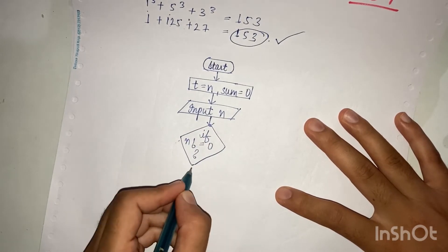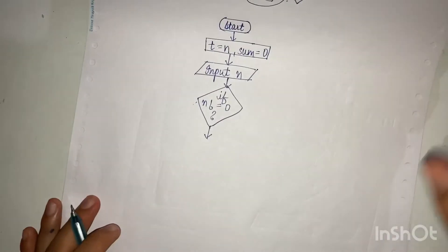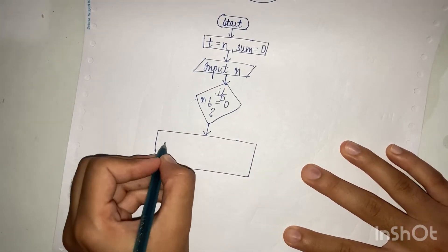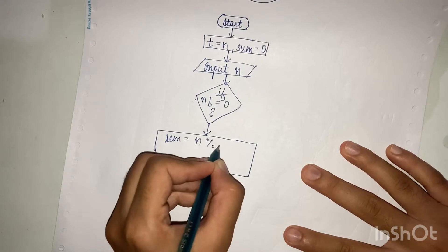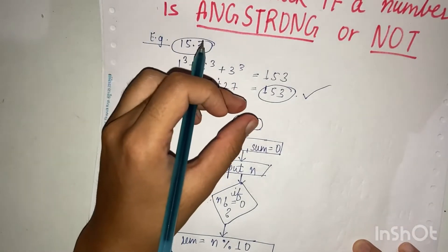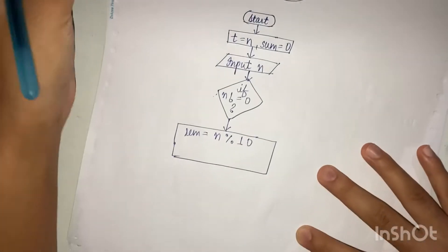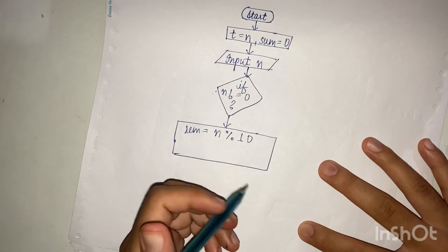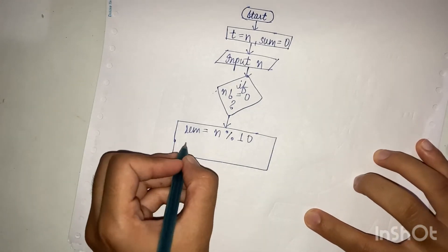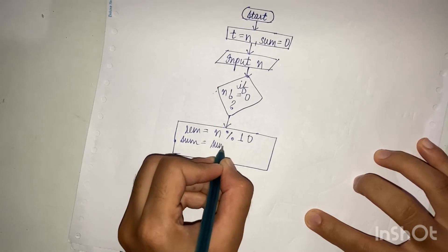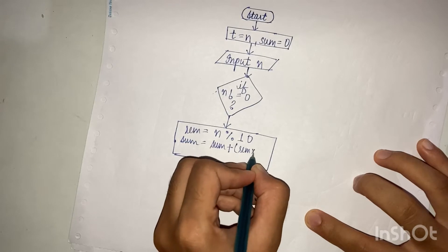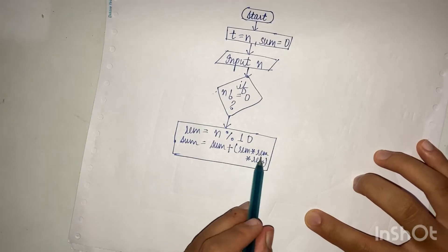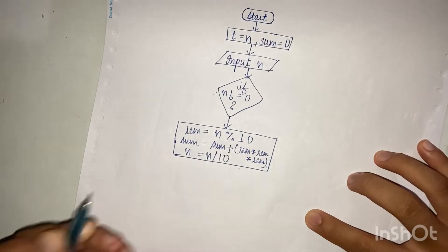We will use a while loop — by now, if you've been watching the previous videos, you should understand how the while loop works and these logics should be simple. We apply the operation: first find the remainder using the modulus operator to extract the digits from the last position, just like in the previous code. Then we find the sum: sum plus rem cubed, which is rem × rem × rem.